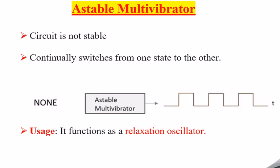Hi friends, welcome back to my YouTube channel. In this session we will discuss the astable multivibrator. In the previous sessions we learned that there are three types of multivibrator: astable multivibrator, monostable multivibrator, and bistable multivibrator. In this session only the astable multivibrator will be discussed, and in the upcoming sessions the remaining two — bistable and monostable — will be covered.